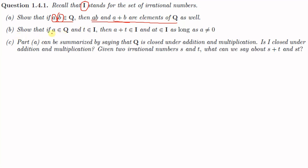Part b: show that if a is an element of Q and t is an element of I — that means a is a rational number and t is an irrational number — then a plus t is an element of I, and at is an element of I, as long as a is not equal to zero. So you have to show that a plus t is an irrational number and at is an irrational number as long as a ≠ 0.